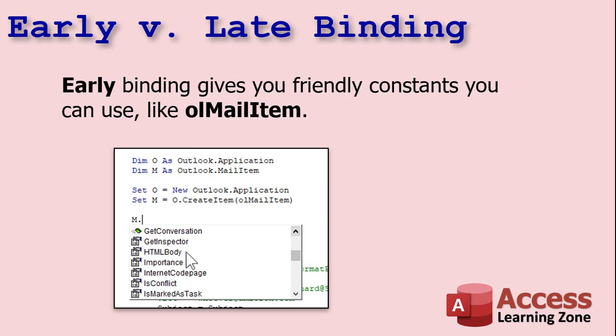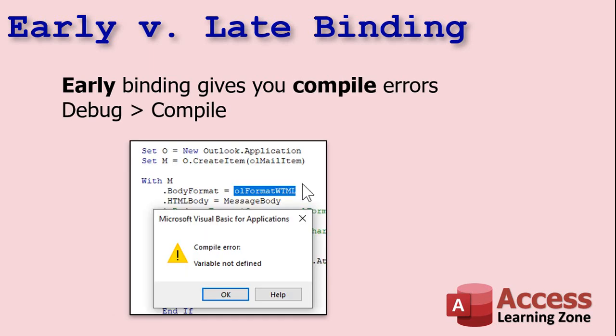Early binding also gives you friendly constants you can use, like OLMailItem — that's a constant stored in that library. Otherwise you have to know what the number of that constant is. Early binding also gives you compile errors. If you go up to Debug > Compile, it'll say it doesn't know what that is. I intentionally spelled something wrong — I put WTML instead of HTML — and you can see it threw a compile error. If you use late binding, you don't get that. You just won't know why your code isn't working.